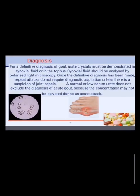Diagnosis: For a definite diagnosis of gout, uric acid crystals must be demonstrated in synovial fluid or in tophi. Synovial fluid should be analyzed by polarized light microscopy. Once the definite diagnosis has been made, repeat attacks do not require diagnostic aspiration unless there is a suspicion of joint sepsis. A normal or low serum urate does not exclude the diagnosis of acute gout, because the concentration may not be elevated during an acute attack.